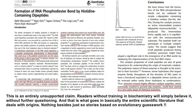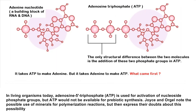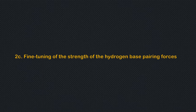This is an entirely unsupported claim. Readers without training in biochemistry will simply believe it without further questioning, and that is what goes on in basically the entire scientific literature dealing with origins — nothing besides stories based on evolutionary guesswork. In living organisms today, adenosine 5'-triphosphate (ATP) is used for activation of nucleoside phosphate groups, but ATP would not be available for prebiotic synthesis. Joyce and Orgel note the possible use of minerals for polymerization reactions but then express their doubts about this possibility.